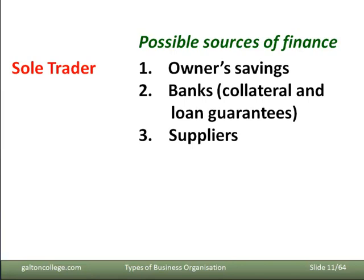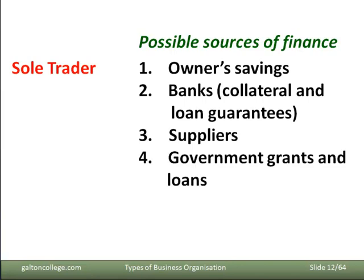Suppliers may help the sole trader. It could be that the suppliers of raw materials or machinery will help the sole trader get established so that they themselves can sell more — more raw materials to the sole trader who will manufacture them into something sold ultimately to the consumer. It could also be the case that the sole trader qualifies for a government grant or a preferential loan, if the government wants to see businesses set up in a certain area.